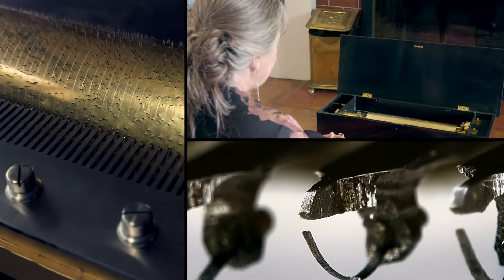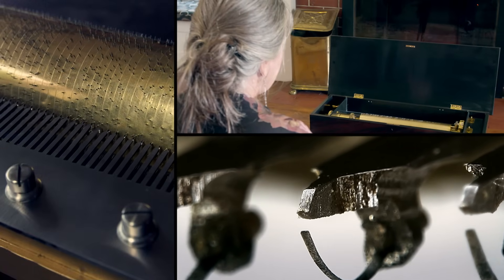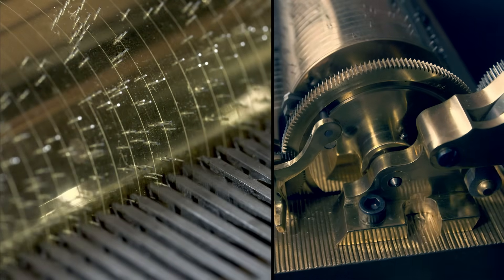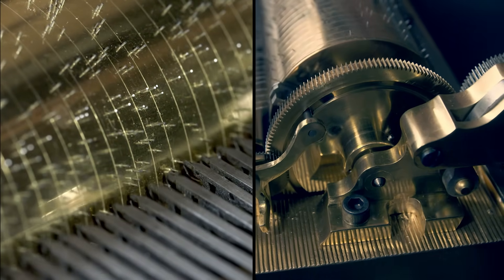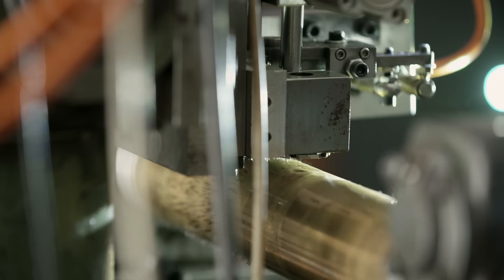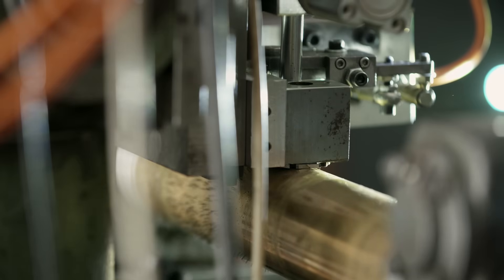Each tooth on the comb of a music box plays a single note. As the cylinder rotates, the tiny pins pluck the teeth as they move past. So Jonathan must position each pin precisely to play the right note at the right time.